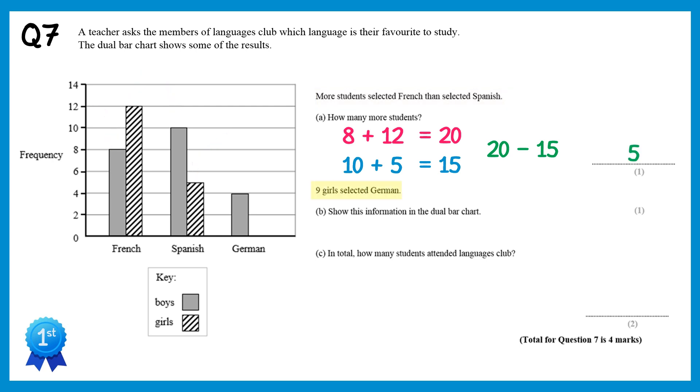We're told that 9 girls selected German, and we need to add this to the bar chart. So all we do is for German, draw a bar that goes up to 9 like this, and shade it in according to the key. Since this is girls, we need to do some shading like this.